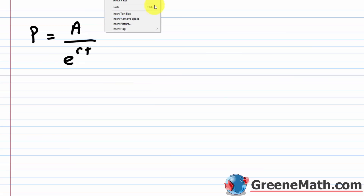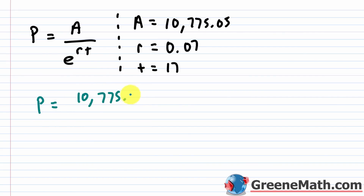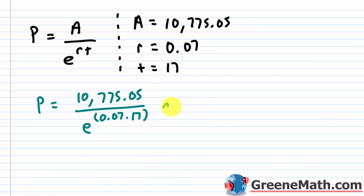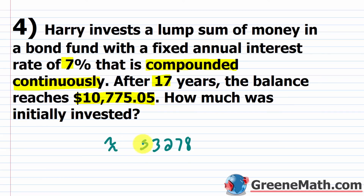Plugging in: P equals 10,775.05 divided by e raised to the power of 0.07 times 17. Again, if using a TI-83, wrap the exponent in parentheses or compute r times t first. Keying this in gives approximately $3,278 when rounded to the nearest hundredth. So $3,278 was the amount initially invested.